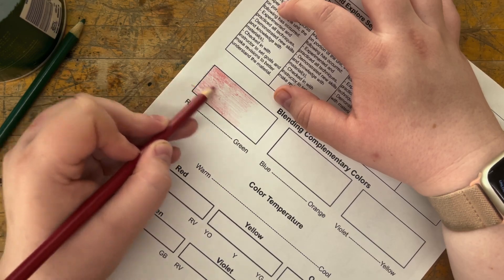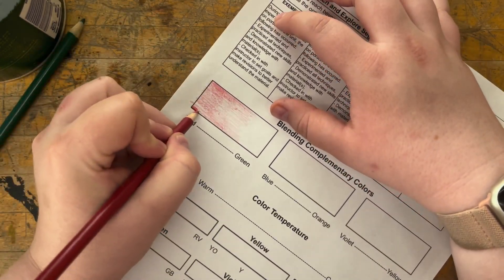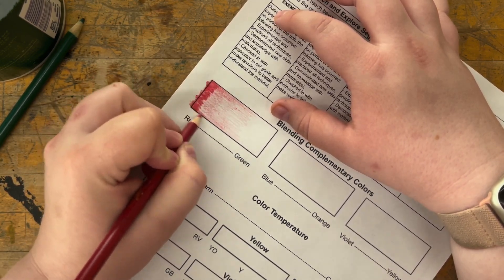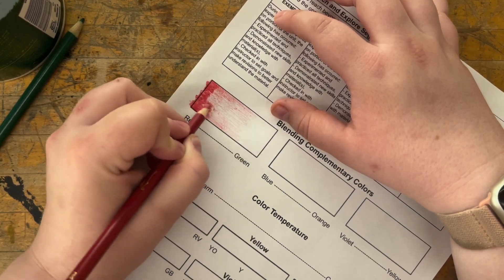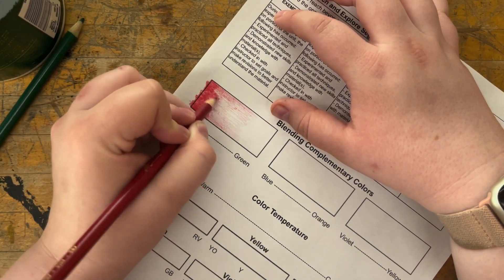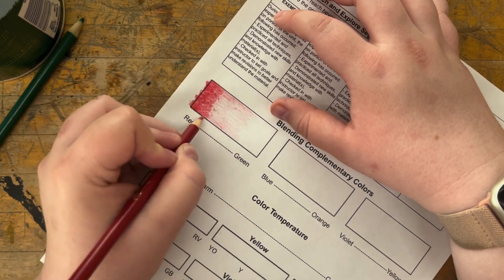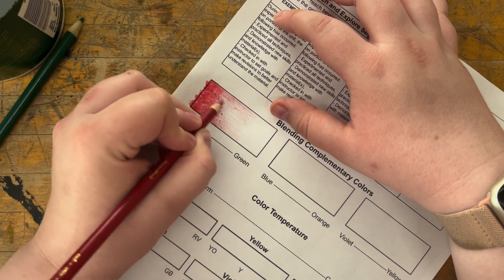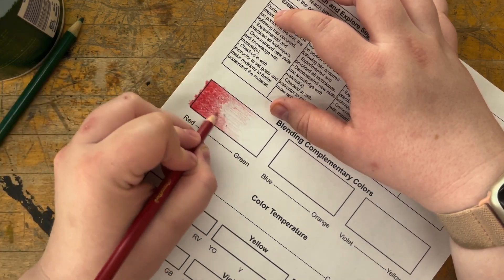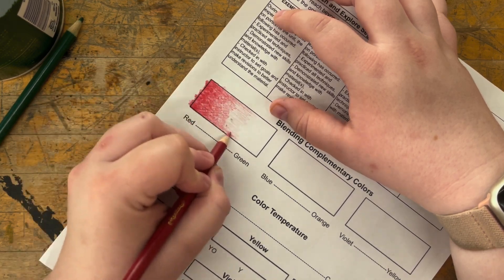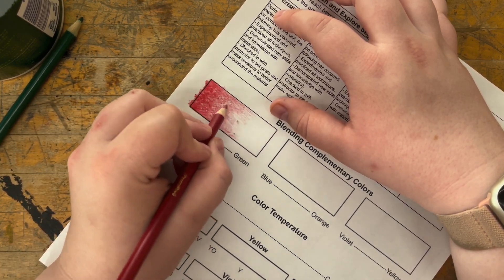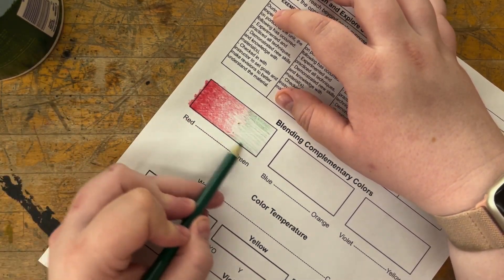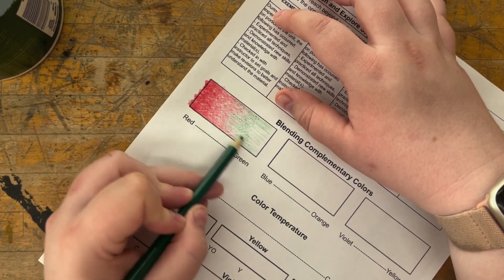When you get started with these, it can be helpful to start with almost like a mid-pressure, about 30 to 60 percent. This can be helpful with colored pencil. Since colored pencil is a very firm material, if you press really hard right away, the colored pencil actually burnishes on the paper and creates almost like a seal where you can no longer go back and blend it.